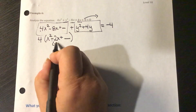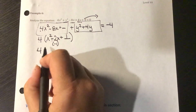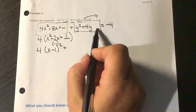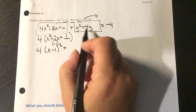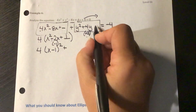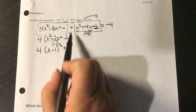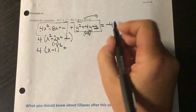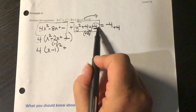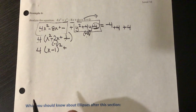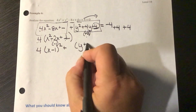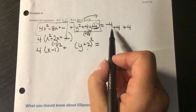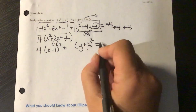For the x part, half of the middle term is negative 1; squaring it gives 1. So I add 1 inside, which means I'm really adding 4 to the left side, so I add 4 to the right side. Factoring gives 4 times (x minus 1) squared. For the y part, half of the middle term is positive 2; squaring gives 4. I add 4 to both sides. Factoring gives (y plus 2) squared. The right side becomes negative 4 plus 4 plus 4, which equals 4.